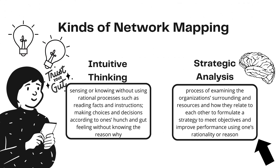We have two kinds of network mapping. First is strategic analysis, and the second is intuitive thinking. Strategic analysis is defined as the process of examining the organization's surroundings and resources and how they relate to each other to formulate a strategy to meet objectives and improve performance using one's rationality or reason. According to Greg Githens, strategic analysis is the individual's capacity for thinking conceptually, imaginatively, systematically, and opportunistically with the required attainment of success in the future. Strategic analysis uses analytical tools, namely SWOT analysis, PES analysis, and VCA analysis. These analytical tools will be further discussed in Module 4.